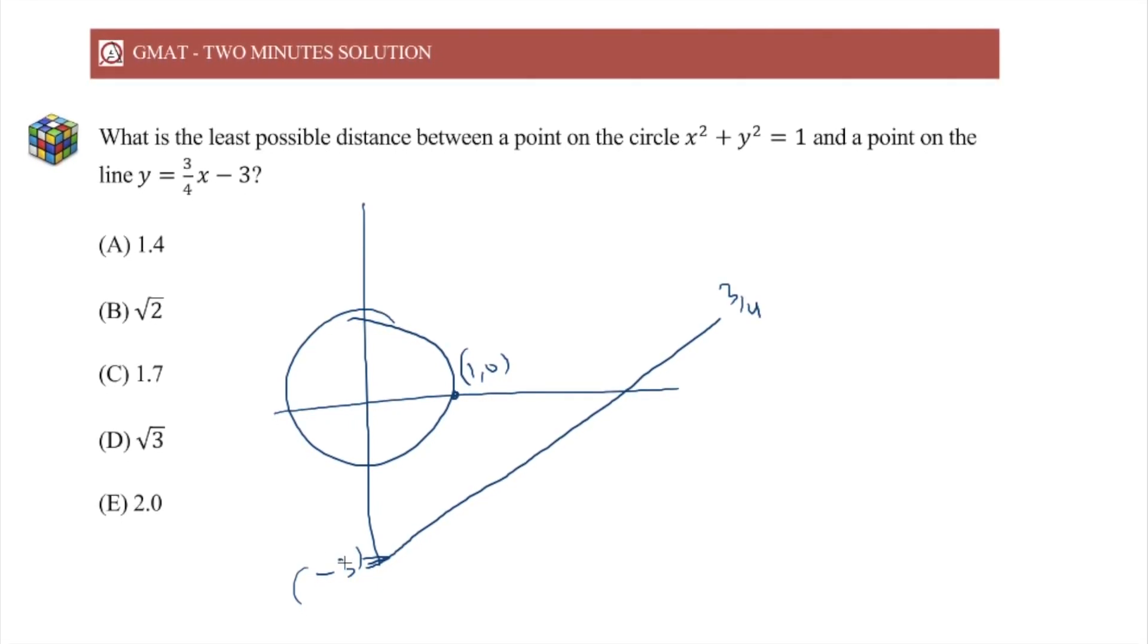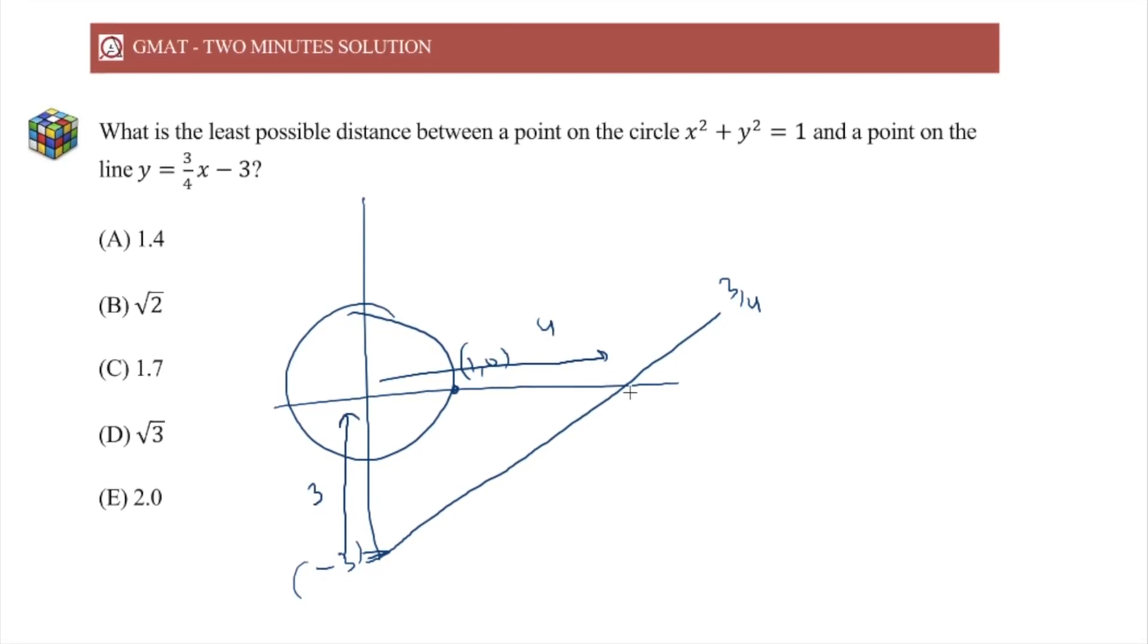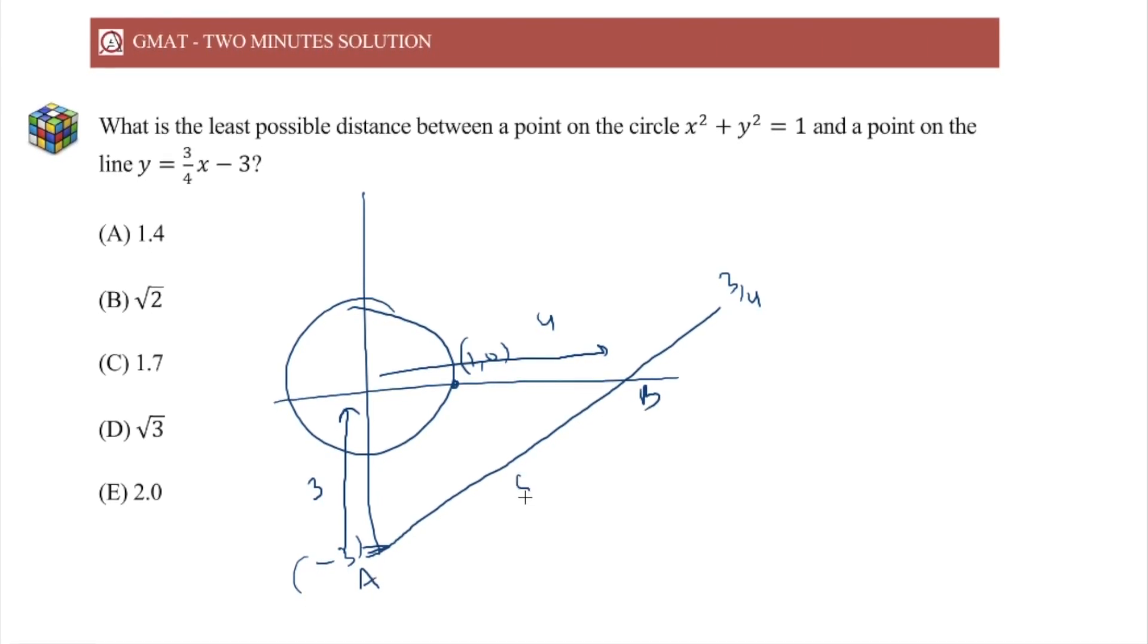Since the slope is 3 by 4, if y increases by 3, then x will increase by 4. Of course, then let's call these points A, B, this AB becomes 5.